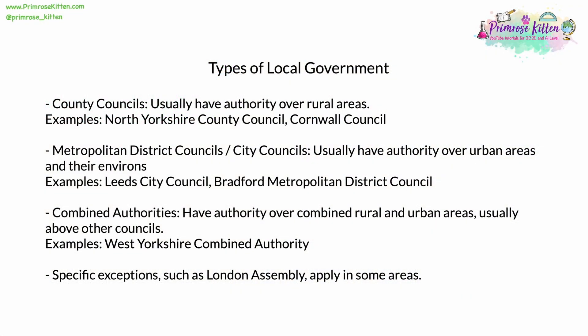There are several different types of local government. County councils usually have authority over more rural areas. Examples include North Yorkshire County Council and Cornwall Council. In both these examples, these county councils have authority over huge but sparsely populated areas where the primary industry is agriculture and most people live in villages, hamlets or small towns.